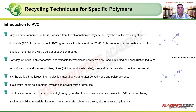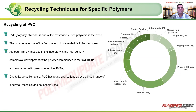PVC is an economical and versatile thermoplastic widely used in building and construction for door and window profiles, pipes for potable water, wire and cable insulation, and medical devices. It is the world's third largest thermoplastic material by volume after polyethylene and polypropylene. Due to its lightweight, durability, low cost, and easy processability, PVC is replacing traditional materials like wood, metal, concrete, rubber, and ceramics.